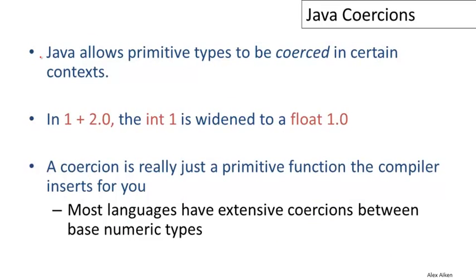Java allows primitive types to be coerced in certain contexts, and coerced means converted from one type to another. So here's an example, let's take the expression 1 plus 2.0, and the difficulty with this expression is that the 1 here is an integer, and the 2.0 is a floating point number, and there is no way to add an int to a float directly.